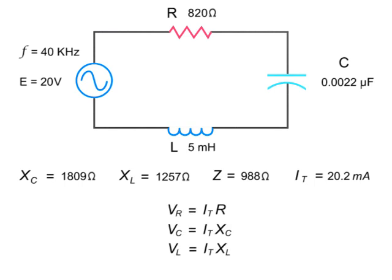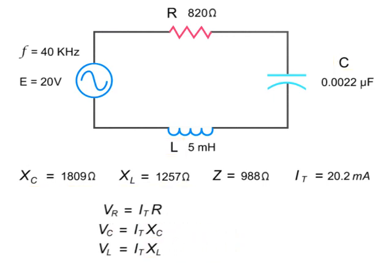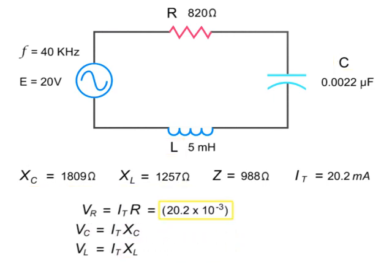To determine the voltage across each component, multiply the total current of 20.2 milliamps by the resistance at each component. For the resistor, it would be 20.2 milliamps times 820 ohms, or 16.6 volts.